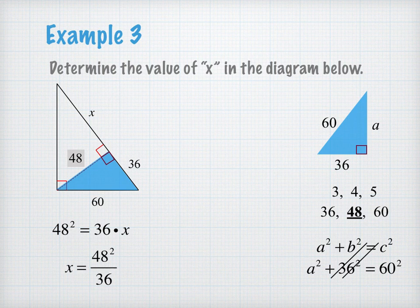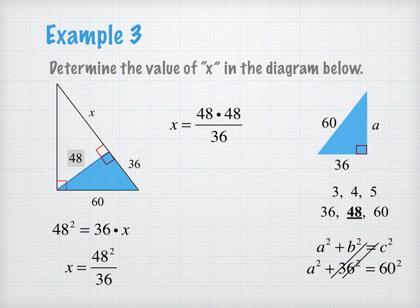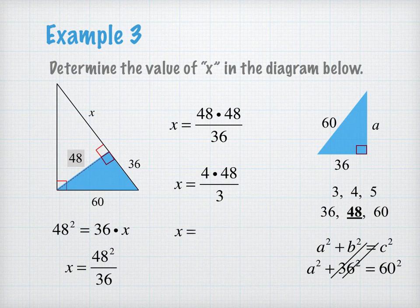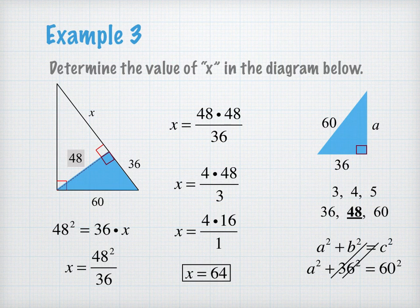x equals 48 squared over 36. Without a calculator, I notice there's a factor of 12 between one of the 48s in the numerator and the 36 in the denominator, so I can simplify. Since 3 goes into 48 sixteen times, x equals 64. This answer makes sense because if 48 is the geometric mean between 36 and 64, the geometric mean should be somewhere between the two — and it is. Hopefully you've learned a little bit about geometric mean in this video.